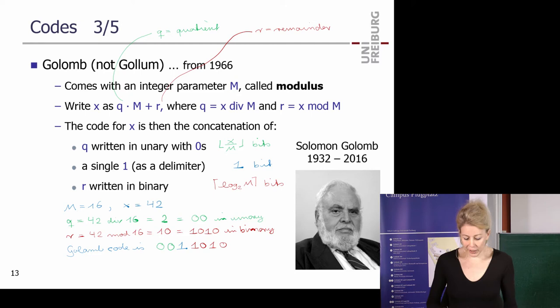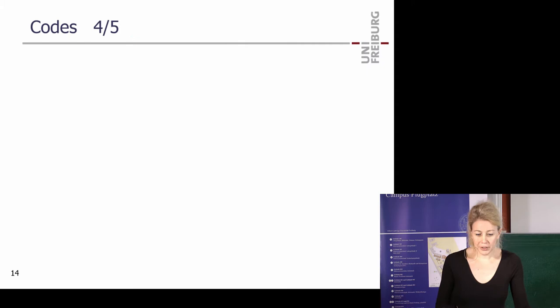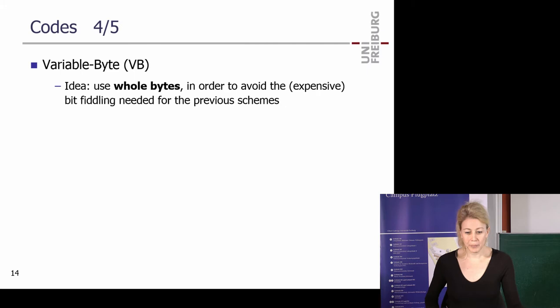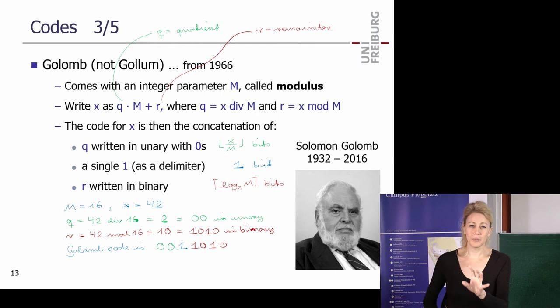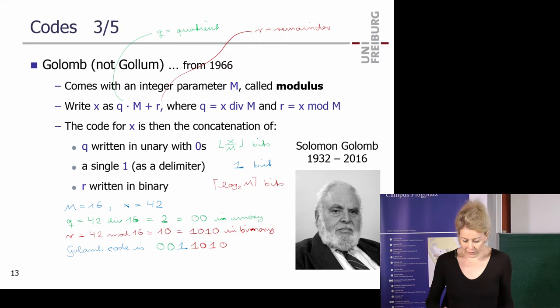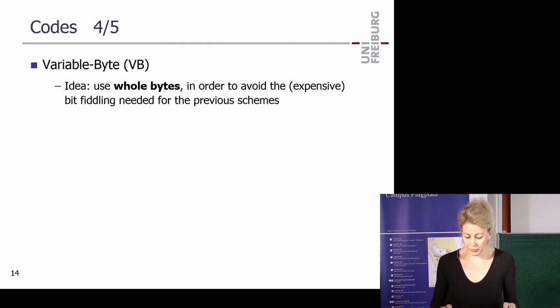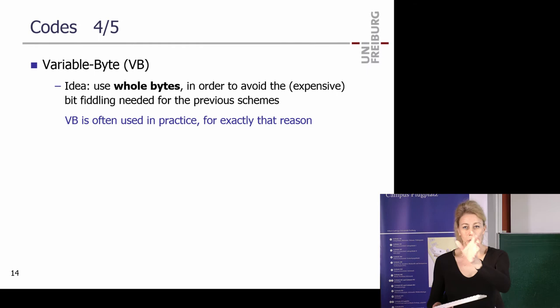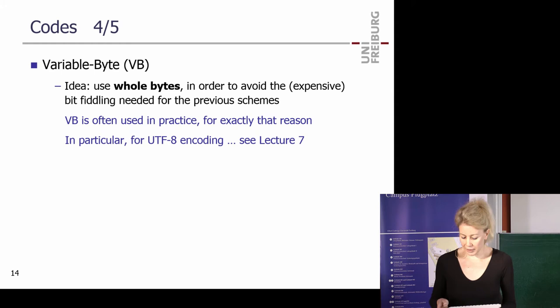Variable byte encoding is a very practical scheme. The idea: codes like Elias Gamma have an awkward number of bits (like 7) that don't align with byte boundaries, making bit manipulation complex and slow. Variable byte instead stores codes in whole bytes. In each byte, one bit is reserved as a continuation flag: if it's 0, more bytes follow; if it's 1, this is the last byte. The remaining 7 bits per byte carry the actual data. If you know UTF-8, it uses exactly this variable byte scheme — we'll revisit it in lecture 7.